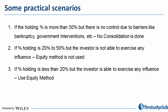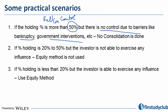Let me take practical examples of substance over form. If the holding percentage is more than 50%, that tells me I should follow full consolidation. However, if in practice there is no control due to barriers like bankruptcy or government intervention, I will not follow full consolidation in spite of owning more than 50%. The 50% is a mere legal form; the actual accounting method follows what's happening on the ground.